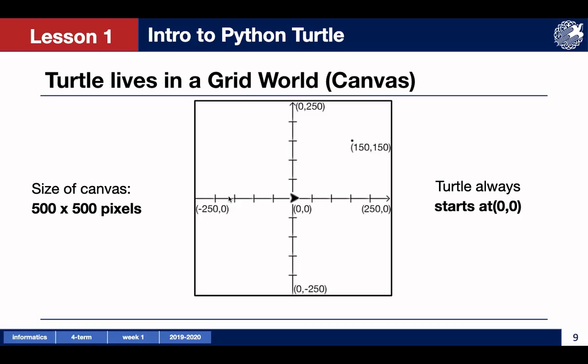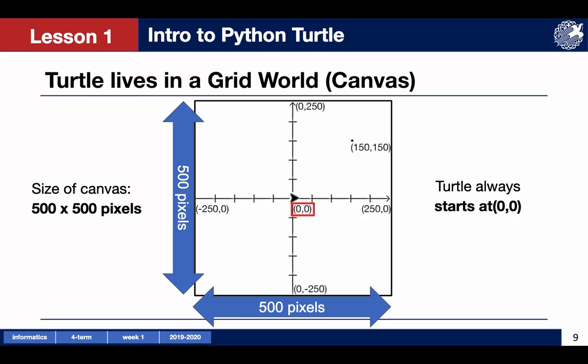Let's talk about how we position the turtle. Our turtle lives in a grid world. In other words, we may say it lives in a canvas. Let us assume that canvas has a width of 500 pixels and also a height of 500 pixels. The turtle always starts at the center of the canvas at position x equals 0 and y equals 0.